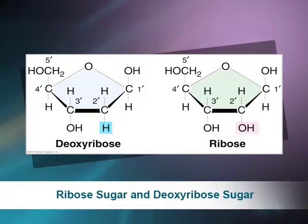The 3'-5' phosphodiester bond acts as the backbone of nucleic acids. There are mainly two types of sugars: deoxyribose and ribose. The sugar in deoxyribonucleic acid (DNA) is deoxyribose; the 'deoxy' designation refers to the fact that the 2' carbon atom of the sugar lacks the oxygen atom that is present at the 2' carbon atom of ribose, the sugar found in ribonucleic acid (RNA).